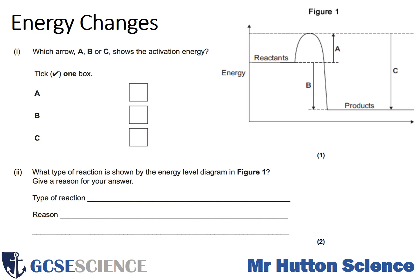The first question has a diagram that accompanies it and you're asked which arrow — A, B, or C — shows the activation energy. You just have to tick one box; it even says one in bold, so don't tick any more than one. What type of reaction is shown by the energy level diagram in figure 1? Give a reason for your answer.